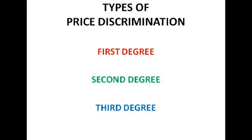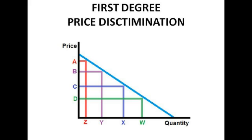There are three different types of price discrimination. The main one you need to know is second degree, but I'll go through all of them. There's first degree, second degree, and third degree, and I'll have a separate slide for each.